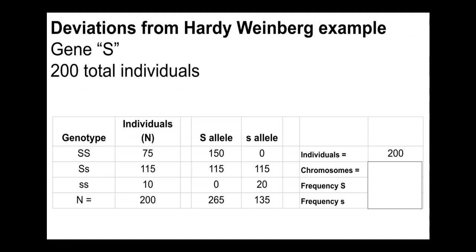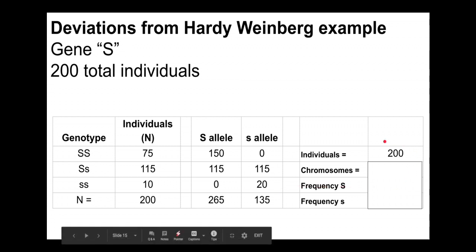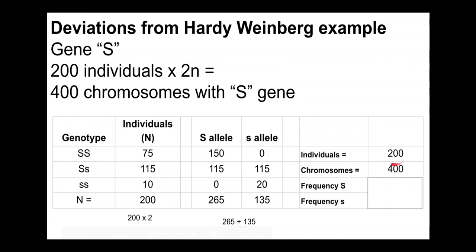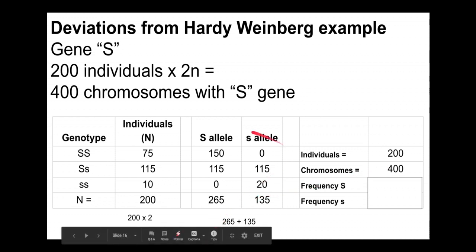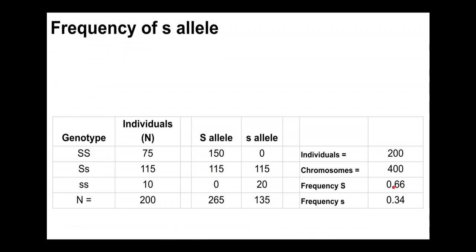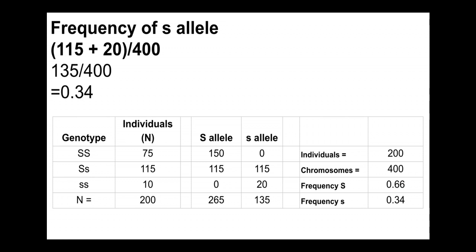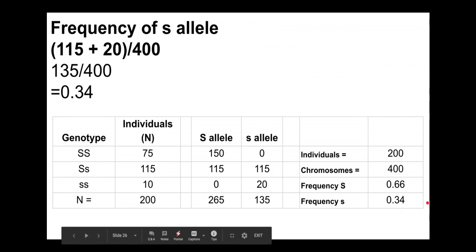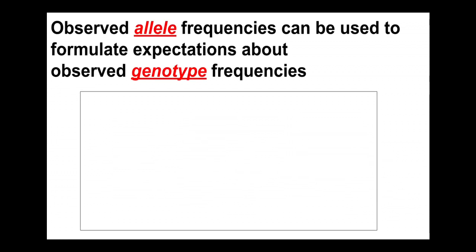There are 200 individuals, all diploid, so there are 400 total alleles in the theoretical gene pool. Checking the counts: 150 plus 115 is 265 big S alleles; 115 plus 20 is 135 little s alleles; 265 plus 135 equals 400 — all alleles accounted for. Dividing: 265 divided by 400 is 0.66 (p), and 135 divided by 400 is 0.34 (q). These add up to 1.0, as expected.